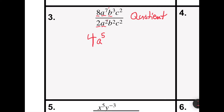Now we'll look at base b: b to the 3rd divided by b squared — keep the base b and 3 minus 2 is 1. Remember, I don't have to write the 1; that's the hidden 1 in math. Finally, we'll look at the base c: c squared divided by c squared. They're exactly the same, which means they're going to divide to 1, or as some people say, they cancel out. So our answer would be 4a to the 5th b.